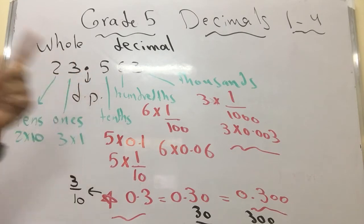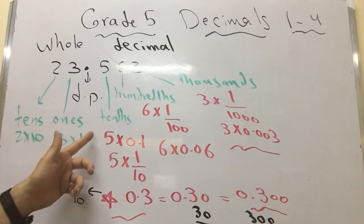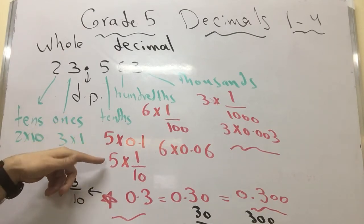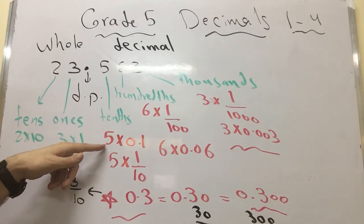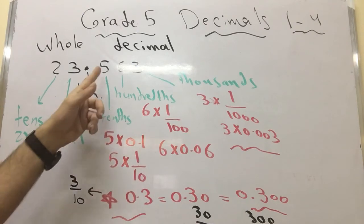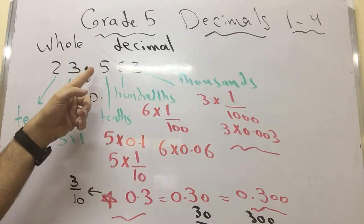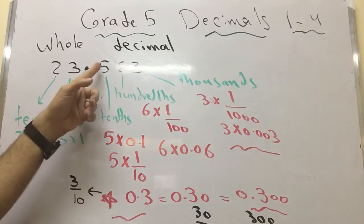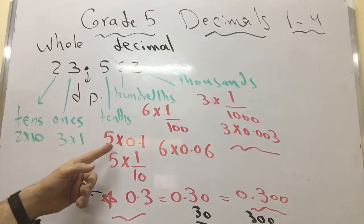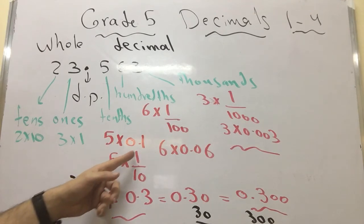What do you mean by 5 in the tenths place? This means it's 5 parts of 10. It equals 5 multiply 0.1, because each one here in the tenths place equals 0.1. So this 5 in the tenths place equals 5 multiply 0.1, or 5 multiply 1 over 10.